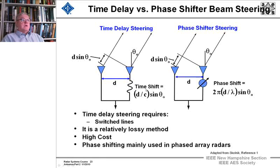But we can also shift, put a time shift in between the two, where this little squiggle represents a time delay equal to d over c times sine theta 0. The time delay steering requires switch lines. It's relatively a lossy method. It's relatively high cost. And phase shifting is mainly used in phased array radars. But I wanted to point out to you that there's two ways to get those phase fronts all lined up, time delay steering or phase shifting steering.